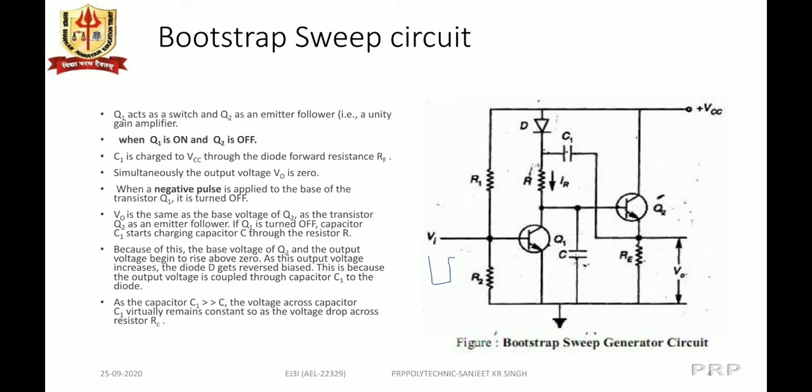As the output voltage increases, the diode D becomes reverse biased. This is because the output voltage is coupled through capacitor C1 to the diode.